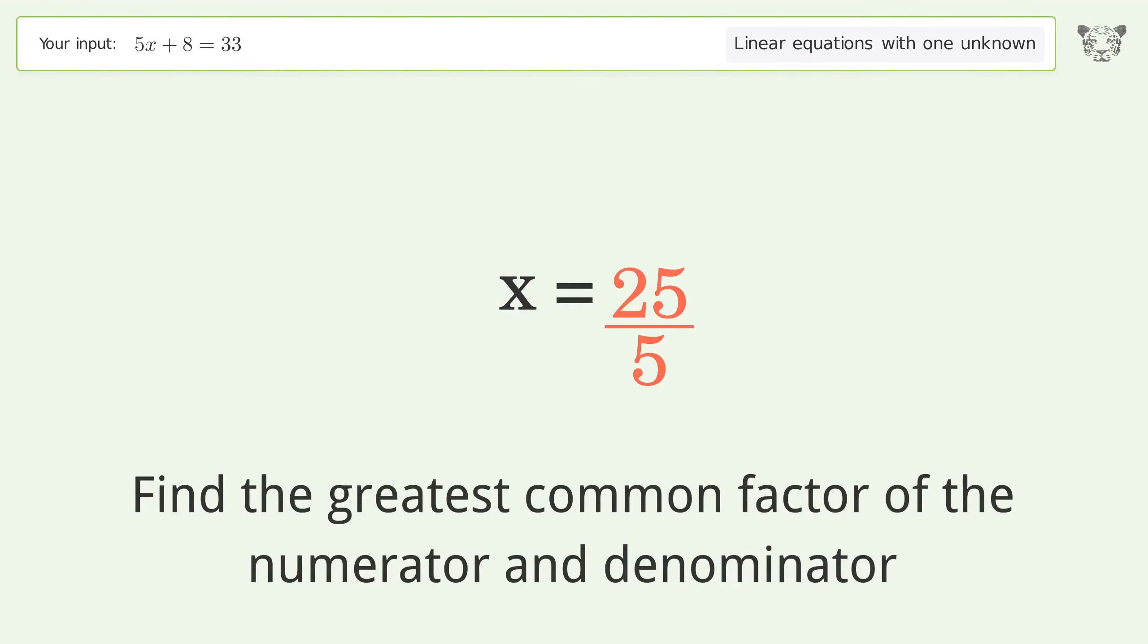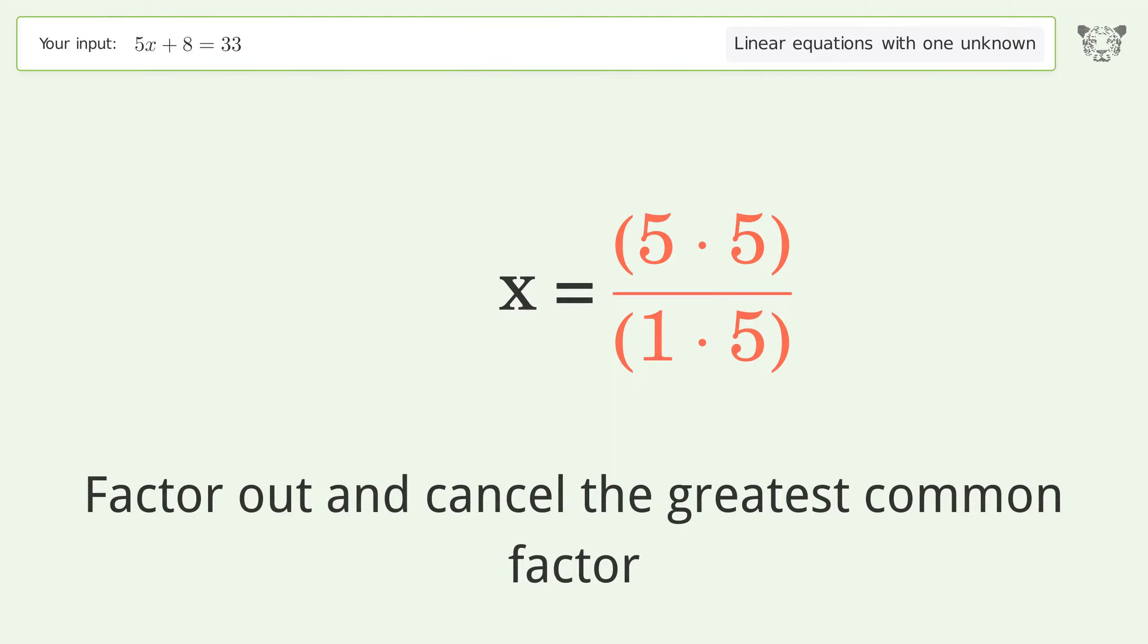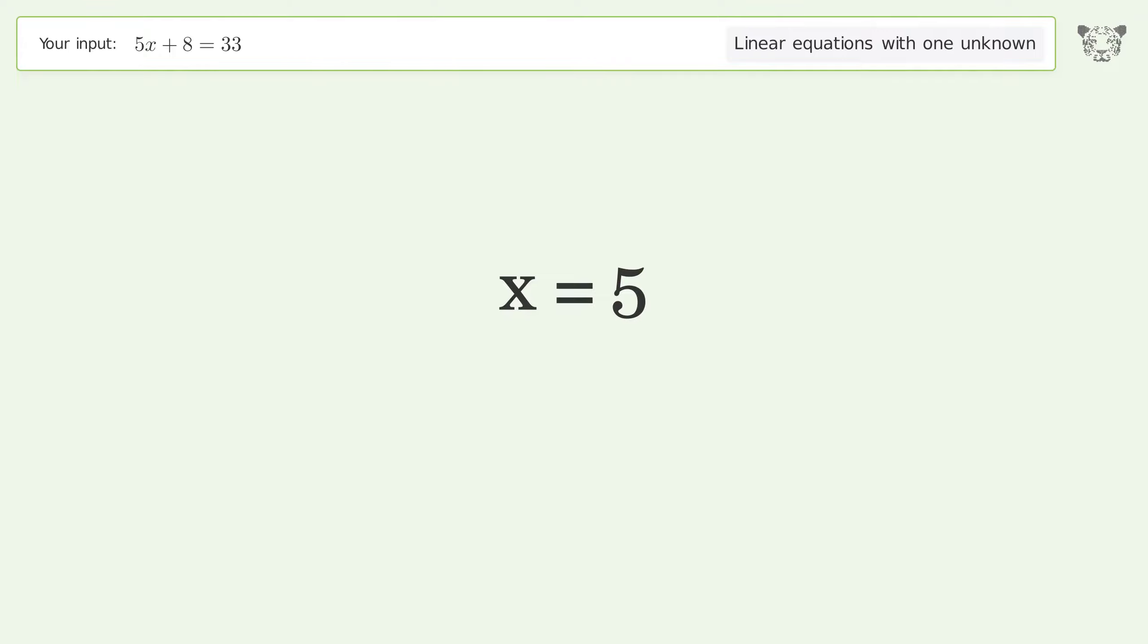Find the greatest common factor of the numerator and denominator. Factor out and cancel the greatest common factor. And so the final result is x equals 5.